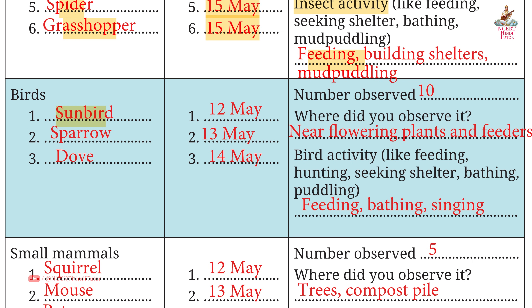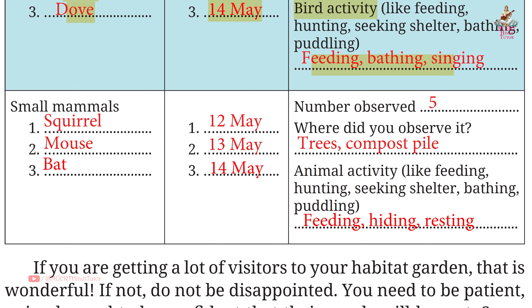Birds observed: 1. Sunbird – 12 May; 2. Sparrow – 13 May; 3. Dove – 14 May. Number observed: 10. Location: Near flowering plants and feeders. Small mammals: Mouse – 13 May; Bat – 14 May. Number observed: 5. Location: Trees, compost pile. Activity: Feeding, hiding, resting. You can note this down and change the dates according to your schedule.